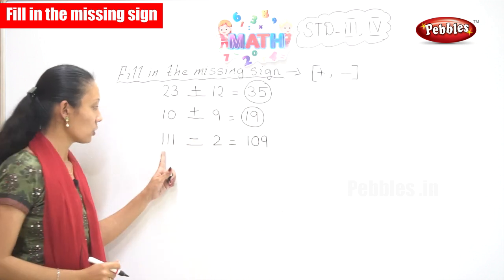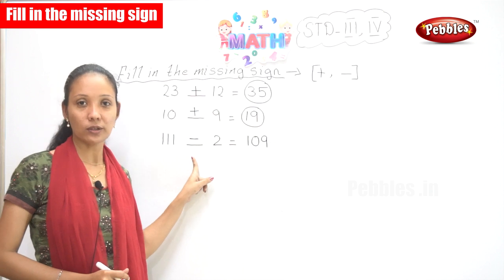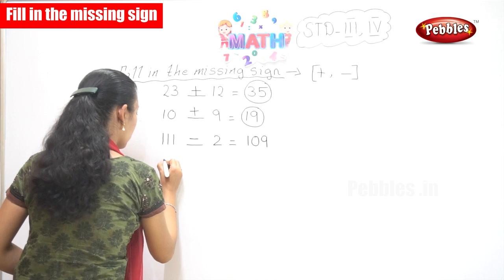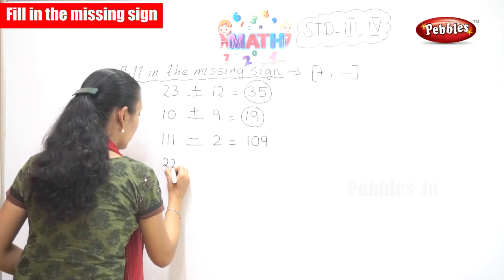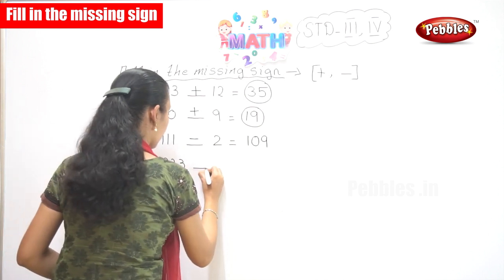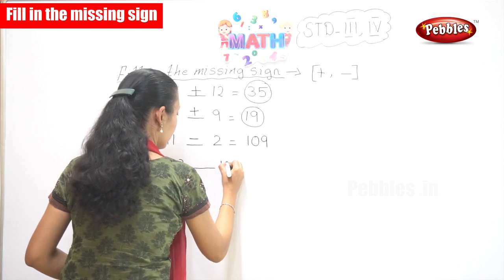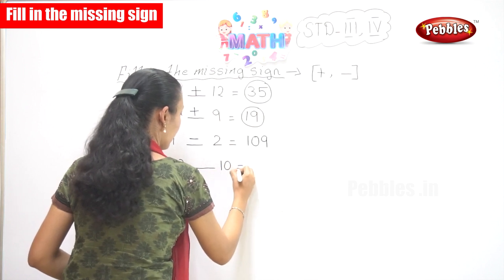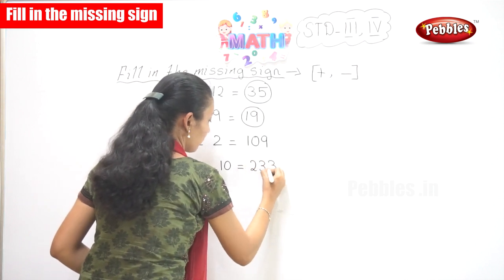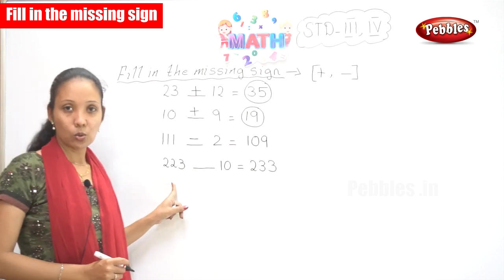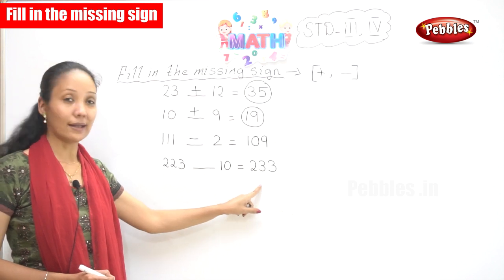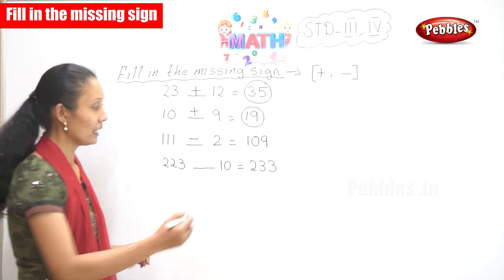Yes, that is the sign here — it is minus. So your sign is minus. What sign do you have to give? Minus. Okay. Now next one: 223 dash 10 is equal to 233.